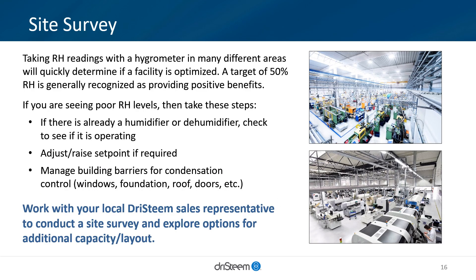Taking RH readings with a hygrometer in various areas will quickly determine if a facility is optimized. A target of 50% RH is generally recognized as providing positive health benefits. If you see RH levels that are too high or too low, then take these steps: first, if there is already a humidifier or dehumidifier, check to see if it is still operating. Next, raise or lower the RH set point as needed. Finally, manage the building barriers for condensation control. Work with the local Drysteam representative to conduct a site survey and explore options for additional capacity and layout.